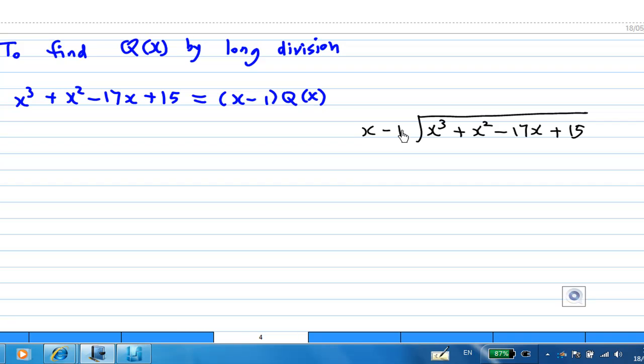So multiply by x squared, I get x times x squared, get x cubed. Subtract now, I get 2x squared minus 17x plus 15. Now multiply x minus 1 by 2x, I get 2x times x, I get 2x squared. Subtract, I get minus 15x plus 15.